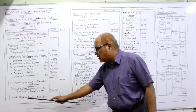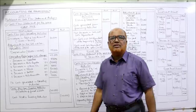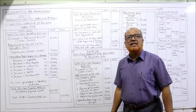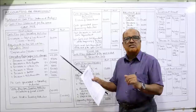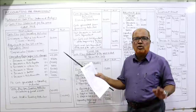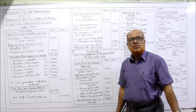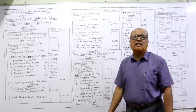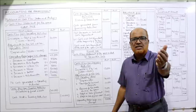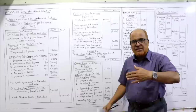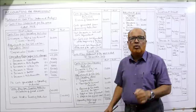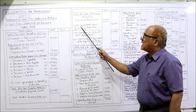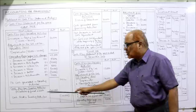If it is positive, cash generated; if it is negative, cash used in investing activity. Last one: cash flow from financing activity. Compare share capital, debentures, etc. Share capital: last year 50,000, current year 50,000 — no change, ignore. Debentures: last year nil, current year 30,000 — during the current year debentures issued for 30,000. When debentures are issued there is cash inflow, so issue of debentures 30,000 without bracket. No other financing activity.